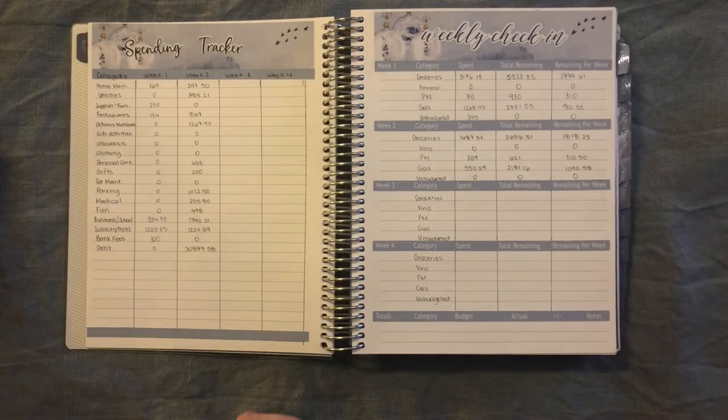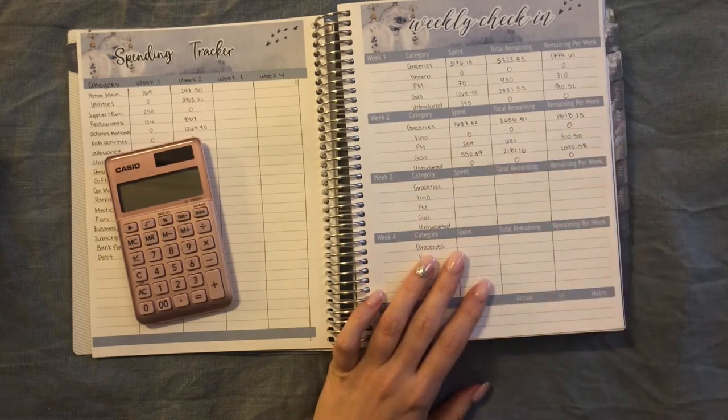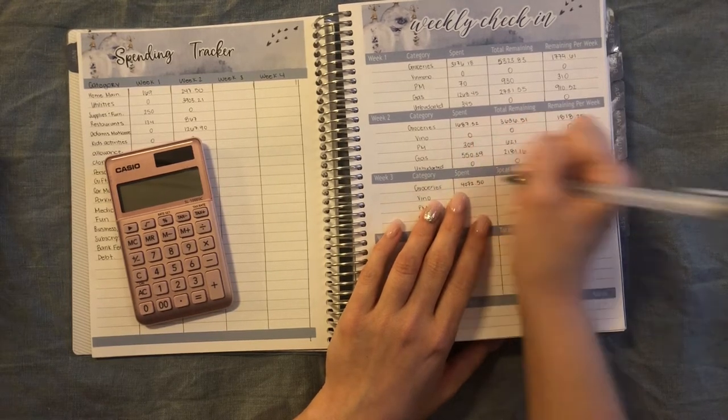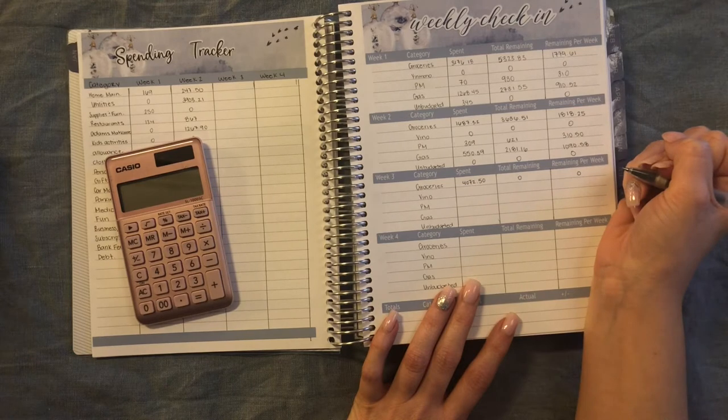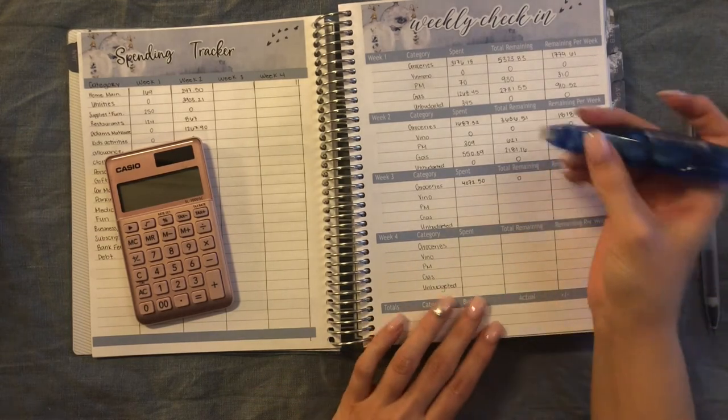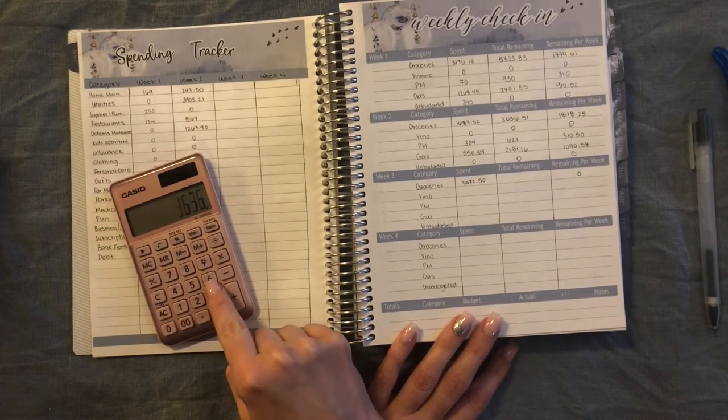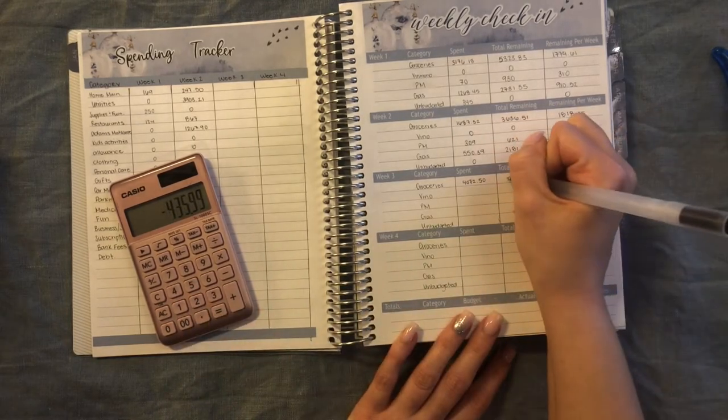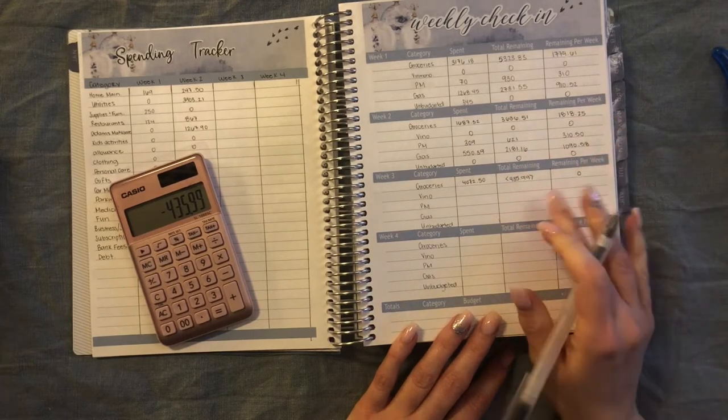So for week three for groceries, we spent way too much. We spent $4,072.50, which means we have absolutely nothing remaining. Instead of putting a zero, I'm gonna put minus to know how much we've gone over budget. So $3,636.51 minus $4,072.50, so we have a negative $435.99.